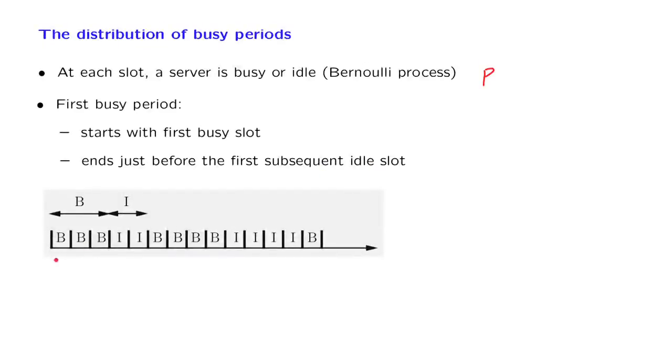For an example, it could be the case that the first slot is busy, in which case the busy period starts right here. The busy period, in this example, extends for three time units and ends just before the next idle slot.